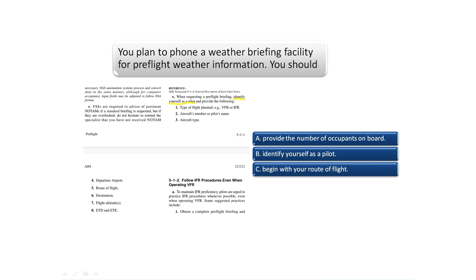The pilot should then provide whether the flight is VFR or IFR, the aircraft number, type, and departure airport along with the route of flight, destination, altitude, and estimated time of departure and time en route. The correct answer to question 1 is B.